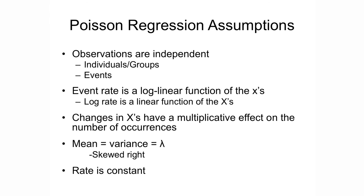Let's talk about the assumptions for Poisson regression. The first is that observations are independent — not only individuals or groups, but also events should be independent. This isn't always the case. For example, if having an event once increases the likelihood of more events, you should not be using Poisson. So if having one relapse increases your likelihood of having a second or more relapses, you should not use Poisson.